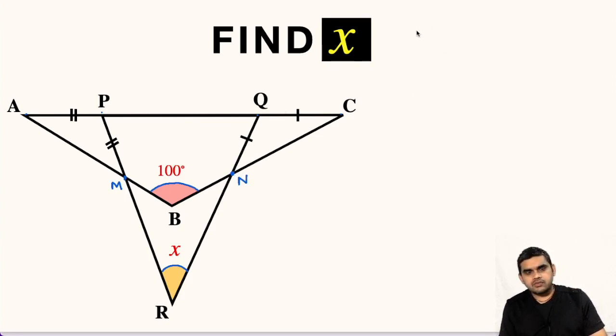First of all, let us focus on triangle ABC. I am drawing it separately. This is B, this angle is more than 90, it's 100 degrees. This point is A and C.